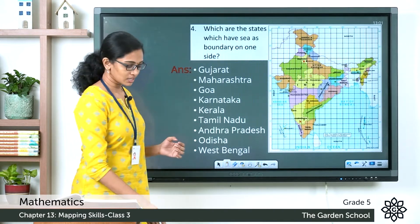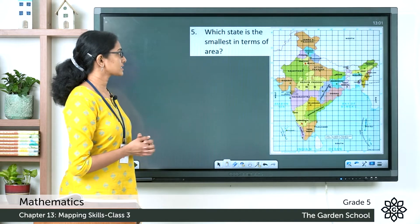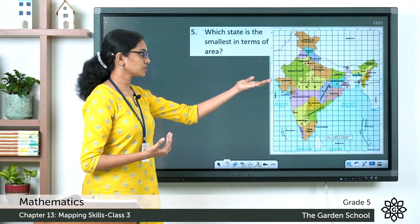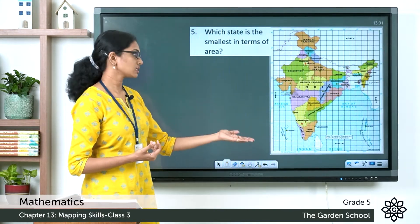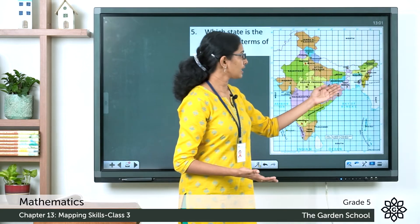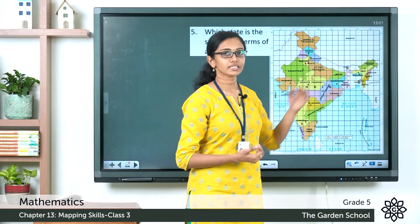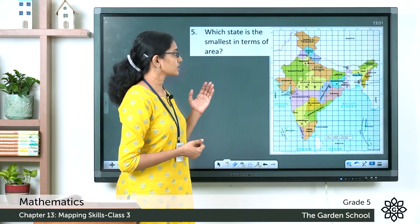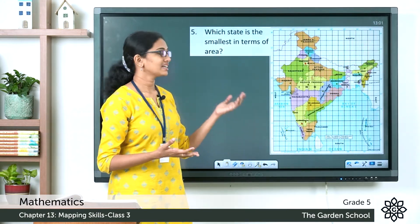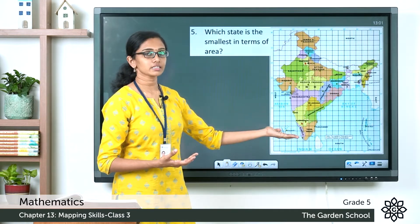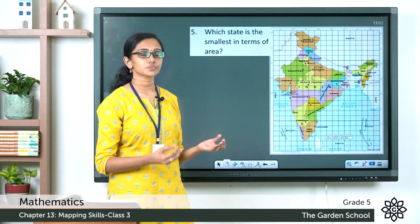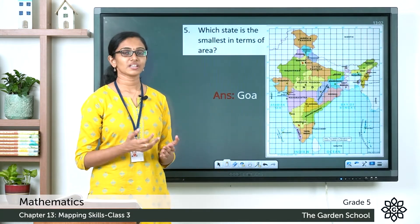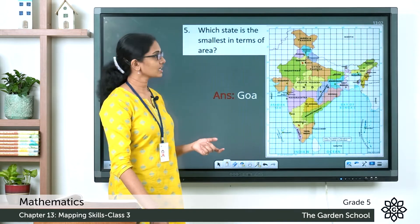The next question: which state is the smallest in terms of area? Based on the map, Goa is a very small state, and the states towards the east side of India are also small states. Among all of these, it seems that Goa has the smallest area, so the answer is Goa.